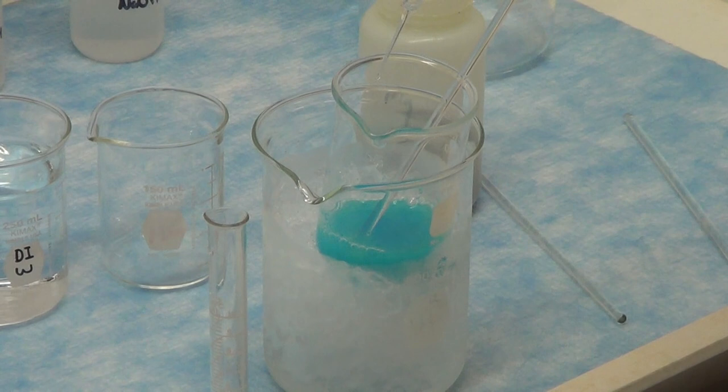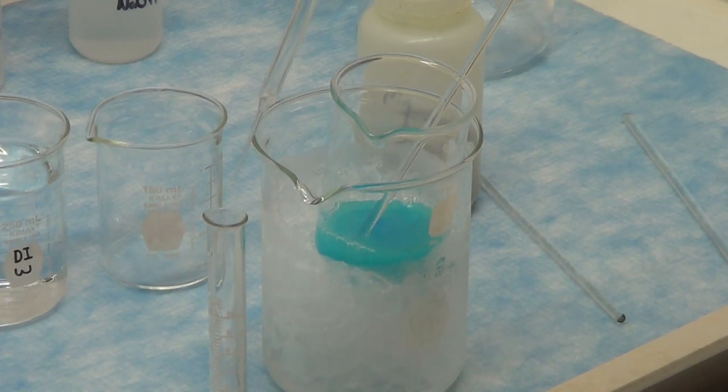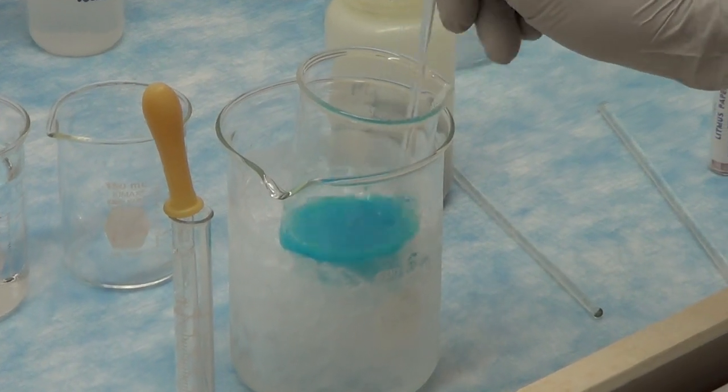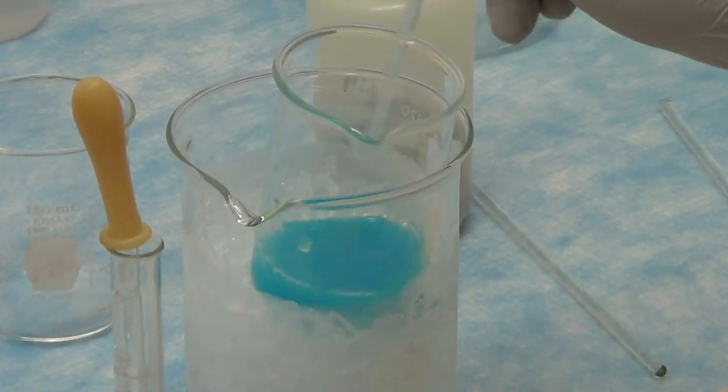The blue gelatinous precipitate that forms is copper hydroxide. The precipitation of copper hydroxide is not complete until the supernatant liquid is basic.